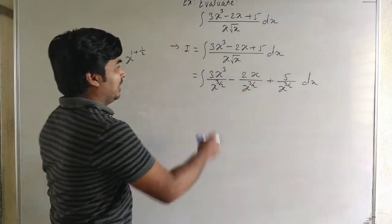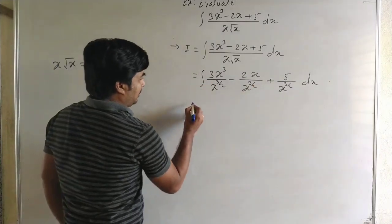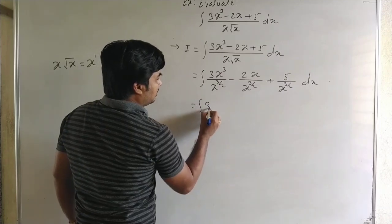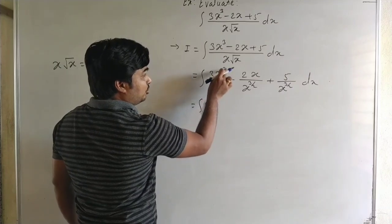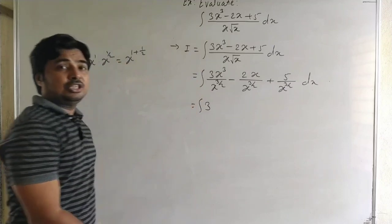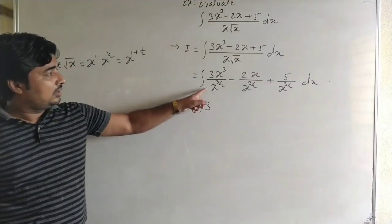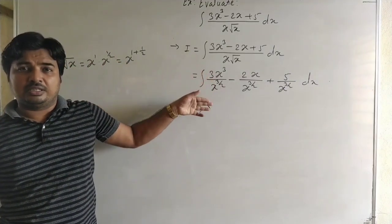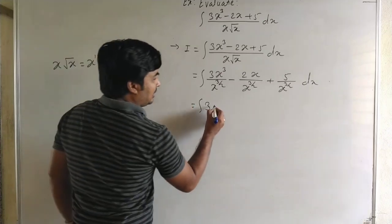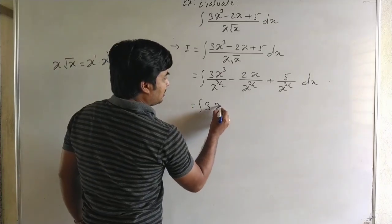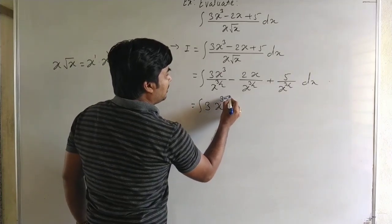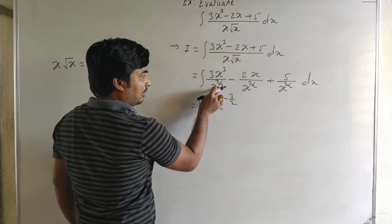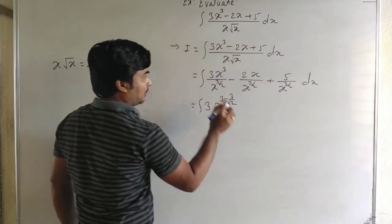We separate all terms and simplify. The integral of 3 into x cubed upon x to the power 3 by 2 — here we use the rules of indices — gives x to the power 3 minus 3 by 2.